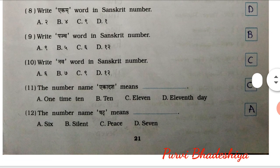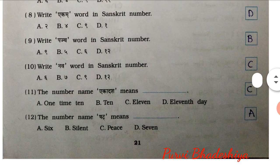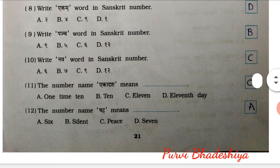8th: Write a come word in Sanskrit number. So the answer is D — 1. 9th number MCQ: Write punch word in Sanskrit number. So the answer is B — 5.